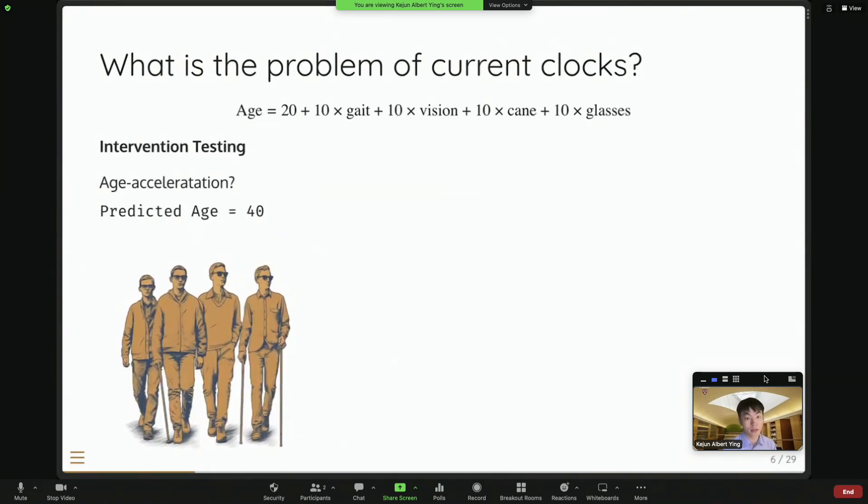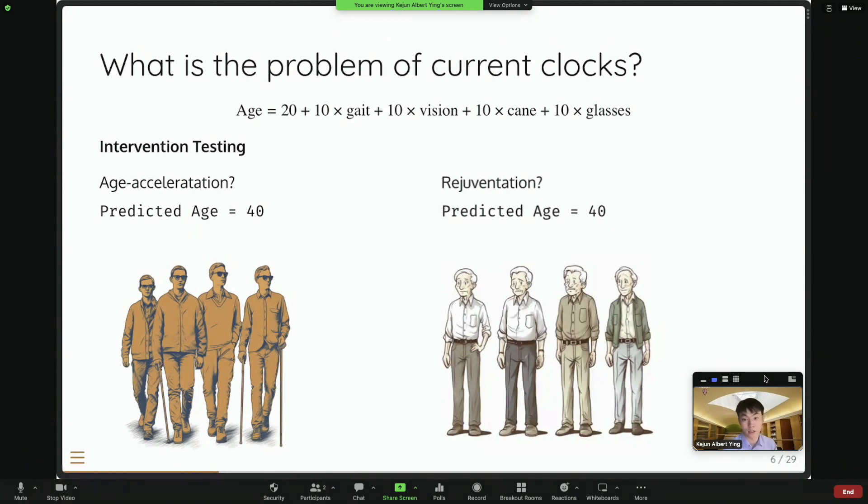But the problems start to manifest when we're testing the intervention. So for example, now we invite the young people to wear sunglasses and use some canes. So suddenly, based on our model, their age is predicted to be 40 years old. So should we call it age acceleration? And similarly, we can invite old people or force them to remove their glasses and cane. And suddenly, based on our model, they are predicted to be 40 years old also. And this is 20 years younger than their chronological age. So should we call it rejuvenation?